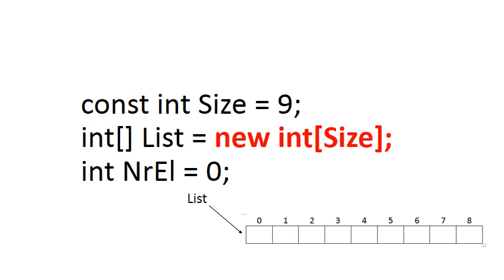On the right side of the assignment statement we actually finalize the actual array. So the word new in programming means allocate memory or reserve memory and it says reserve memory for nine elements in this array.